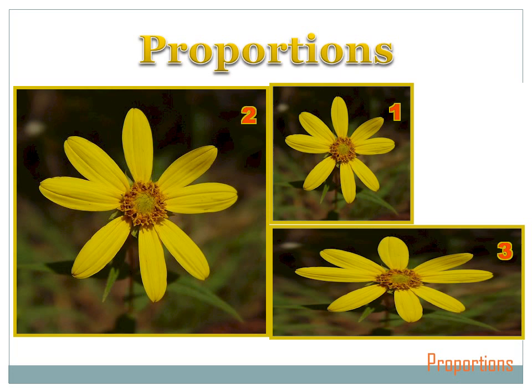If two objects are proportional, that means they've changed size one from the other, but they've changed sizes evenly — they've grown or shrunk proportionately. Let's examine that idea visually. I've got three pictures of flowers here, and picture number one is the original. In picture two, I increased the height and the width the same amount, so the flower looks the same and is not distorted. In flower number three, I increased the width but not the height, so I stretched it — not proportionally. So number three is not proportional to number one or number two.